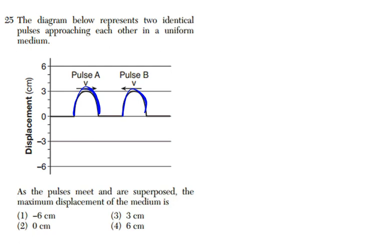But if we take both of these pulses when they're right on top of one another and we combine them, we've got three centimeters from pulse A, three centimeters from pulse B. That gives us a total displacement of six centimeters.